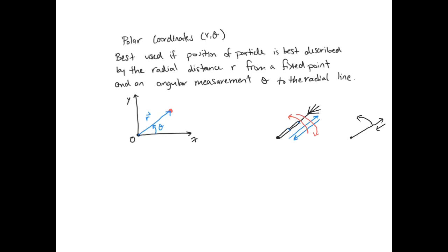Another really good example is a fire truck. The ladder can extend upwards or downwards, and it can also rotate one way or the other. So there are actually a lot of practical examples that use polar coordinates.